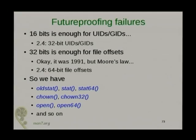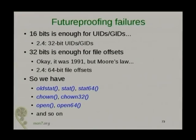Other kinds of future-proofing problems: 16 bits is enough for user IDs — except it wasn't, we discovered. 32 bits is enough for file offsets — well, it was 1991, but disk drives do get bigger. So in 2.4 we had 64-bit offsets, and we now have a whole bunch of system calls that essentially reproduce functionality to handle these changing sizes of data types.